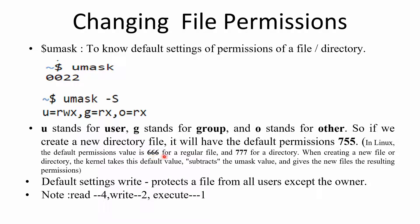In Linux, the default permission value is 666 for a regular file and 777 for a directory. When creating a new file or directory, the kernel takes this default value, subtracts the umask value, and gives the new file the resulting permission. In our case the umask value is 022, and we are checking the file permission of a directory.